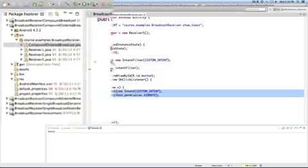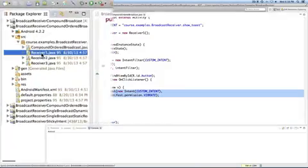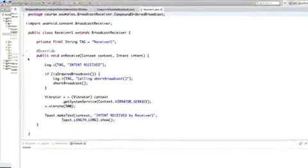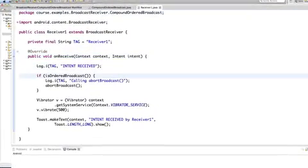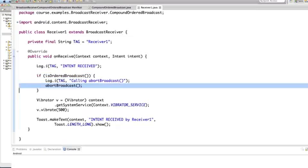Let's open the Receiver 1 code. Now here in OnReceive, you see that the code checks to see whether this is an ordered broadcast. And if so, it calls AbortBroadcast, which consumes the broadcast and in this case prevents it from being sent on to Receiver 3.